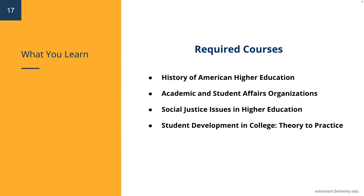Here are the four required courses in the certificate. Please keep in mind that scheduling for these courses changes from one term to the next. First, History of American Higher Education. Next, Academic and Student Affairs Organizations. Third is Social Justice Issues in Higher Education. And Student Development in College: Theory to Practice.